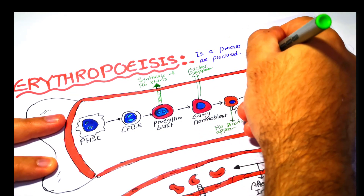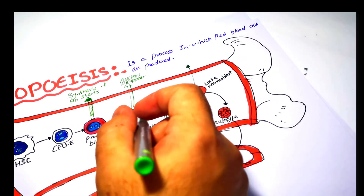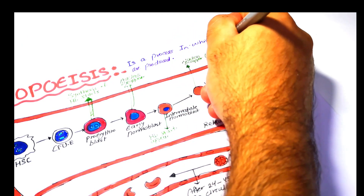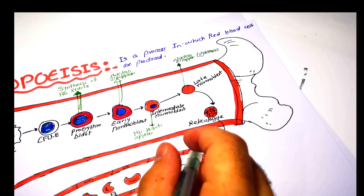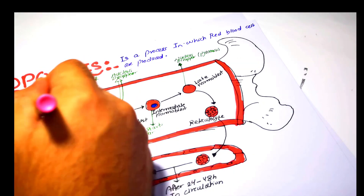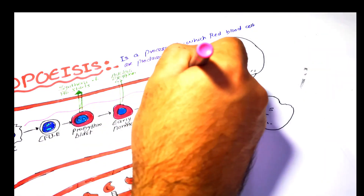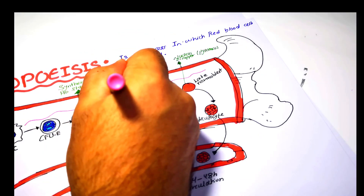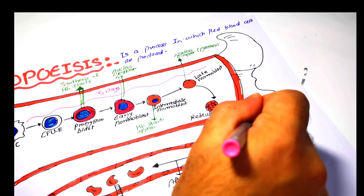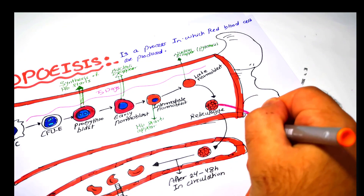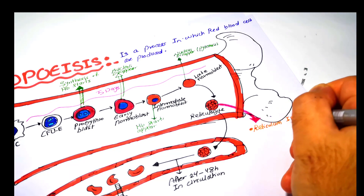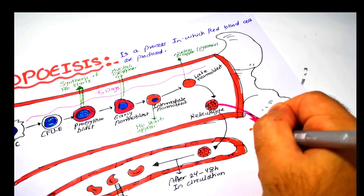While in the late normoblast, the nucleus will disappear, which is known as pyknosis. And after that, the late normoblast will be differentiated into a reticulocyte. Two things occur to the reticulocyte: the first is the formation of the reticulum, and the second is that the reticulocyte will enter the circulation.